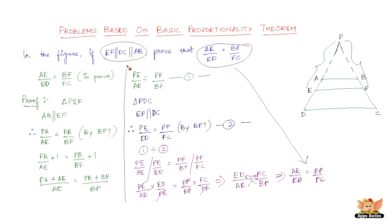As far as method goes, the concept is the basic proportionality theorem with a bit of algebraic manipulation. We added 1 to combine PA and AE into PE, and PB and BF into PF — only then could we cancel PE and PF using the results from triangle PDC. Every step depended on the basic proportionality theorem, which let us establish the ratios PA by AE equals PB by BF, and PE by ED equals PF by FC.